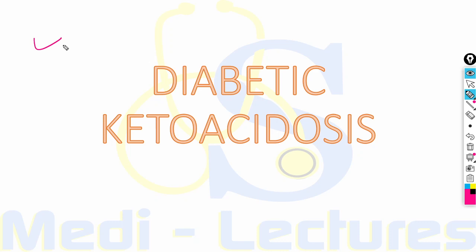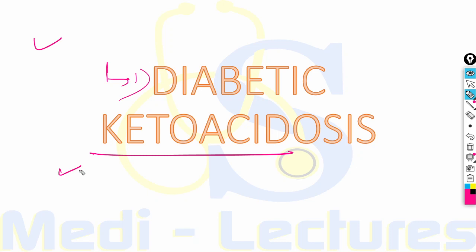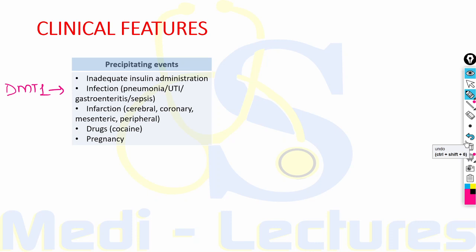After completing a couple of lectures on symptomatology, we are starting a series on emergency medicine. The first topic is diabetic ketoacidosis. DKA is a complication usually of type 1 diabetes mellitus, seen in patients who are already a known case of type 1 diabetes, but it can also be a presenting feature in a patient who has just developed type 1 diabetes.